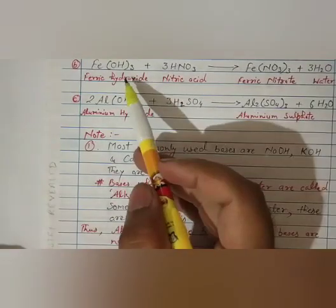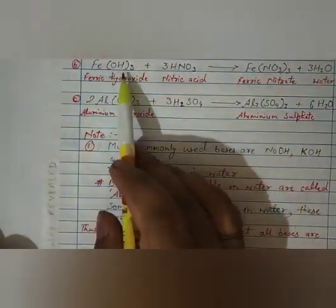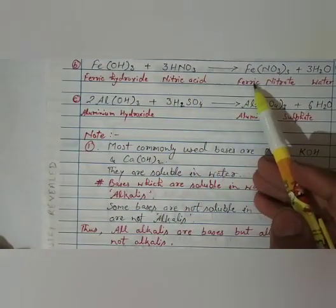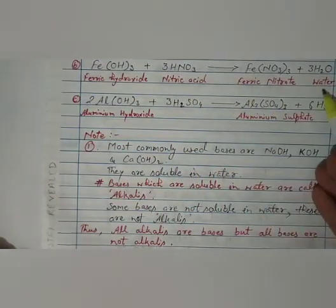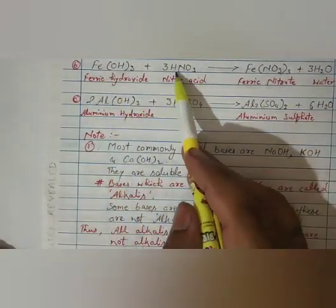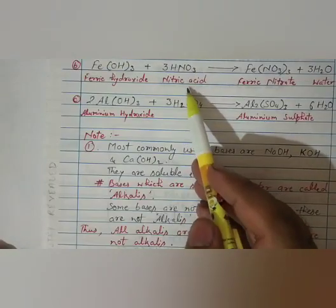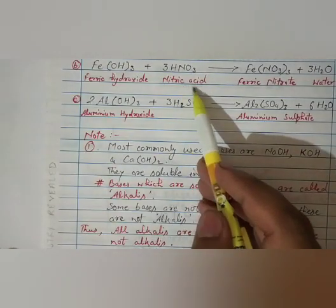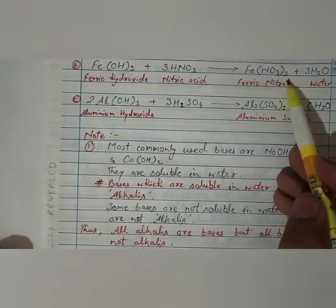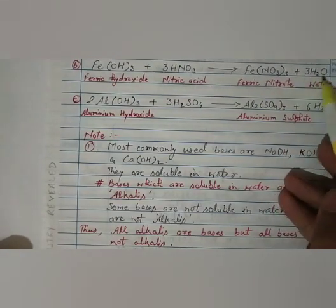Let's take one more example of ferric hydroxide reacting with nitric acid forming ferric nitrate plus water. Fe(OH)3, this is ferric hydroxide reacting with HNO3. This is a new acid which we are using. Please learn this name, it is nitric acid. It forms ferric nitrate Fe(NO3)3 plus 3H2O, this is water.